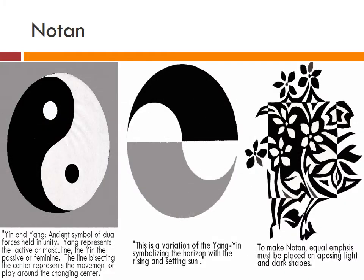Here is an example of effective use of negative space. This is Notan, and it is an ancient symbol of dual forces held in unity.